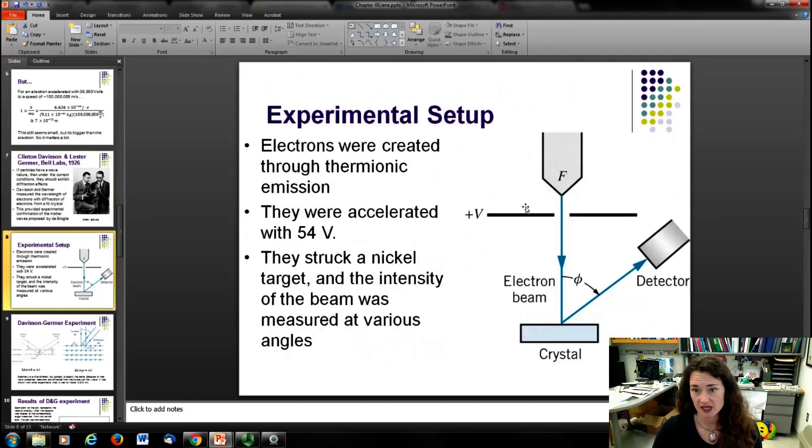So their experimental setup looked like this. They had a filament basically, and they passed a high current through the filament. And then the matter in the filament, probably tungsten, got really hot. And because of the heat, there was enough energy to eject the electrons from the filament. This is called thermionic emission. Then once they came off the filament, they passed it through a little pinhole and accelerated it with a voltage of 54 volts. So they gave it a little kinetic energy. The electrons then struck a nickel target, and then they were diffracted by that nickel. And then the intensity of the diffracted beam was measured at various angles by a detector whose position could be variable and moved along an angle.